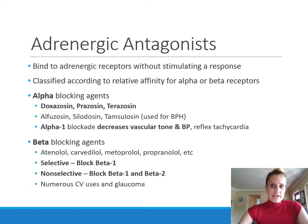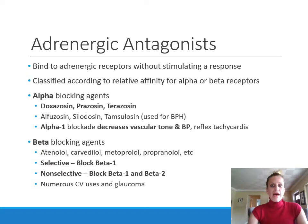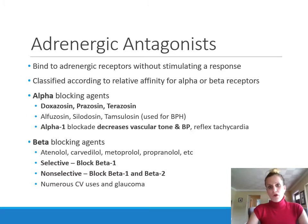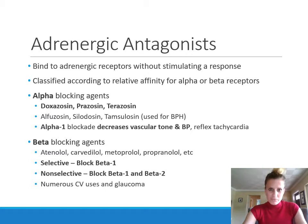Adrenergic antagonists are classified according to their relative affinity for alpha receptors or beta receptors. We have alpha adrenergic antagonists, more commonly called alpha blockers, and beta adrenergic antagonists, more commonly called beta blockers.